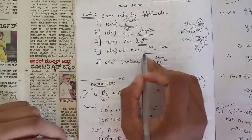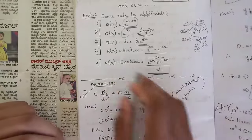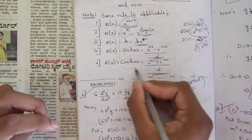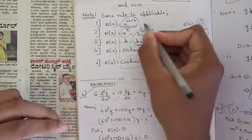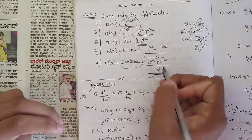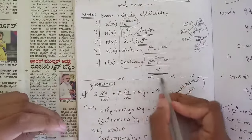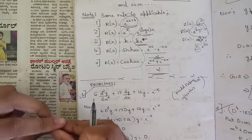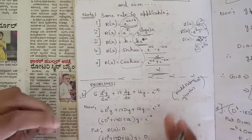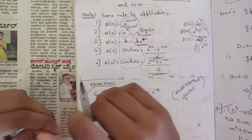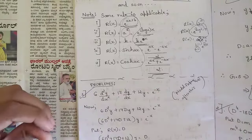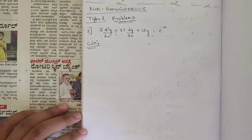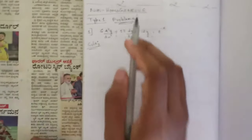The same method also applies to hyperbolic functions such as sinh(ax) and cosh(ax). Whenever these appear in r(x), we can simplify them using their exponential formulas, so that ultimately we get all values in the form of e^(ax). Now we will solve problems related to Type 1.